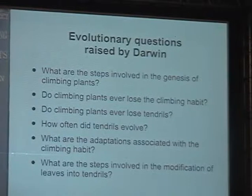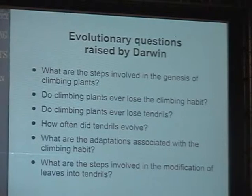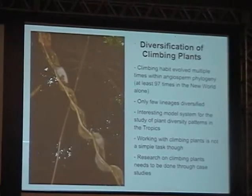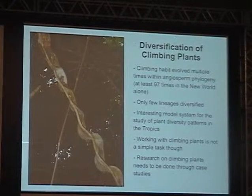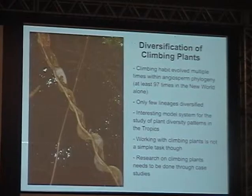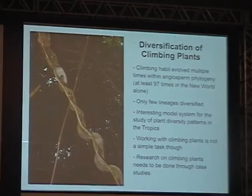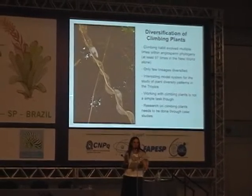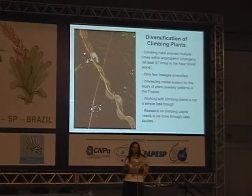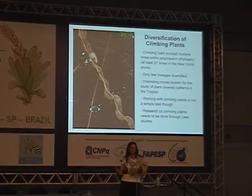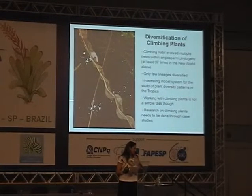At the time, there was still a question of whether climbing plants formed a clade. Years later, once we got a phylogeny of the angiosperms, it was clear that climbing plants evolved multiple times throughout the history of angiosperms — 97 times alone in the New World tropics. One interesting thing is that even though there are so many evolutions of the climbing habit, only a few lineages actually diversified.